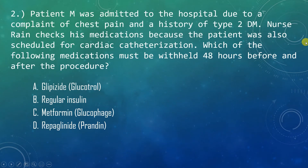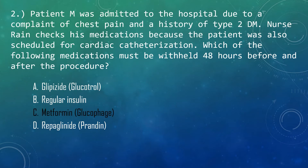Question number 2: Patient M was admitted to the hospital due to chest pain and a history of type 2 DM. Nurse Rain checks his medications because the patient was scheduled for cardiac catheterization. Which medication must be withheld 48 hours before and after the procedure? Metformin needs to be withheld 48 hours before and after cardiac catheterization because of the contrast medium injection during the procedure. If the contrast medium affects kidney function with metformin in the system, the patient would be at increased risk for lactic acidosis. Letters A and D will be withheld once the patient is on NPO, while regular insulin may be administered if elevated blood glucose levels occur.